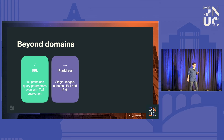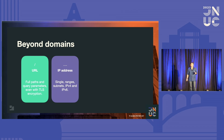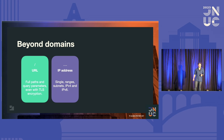IP addresses — that's another key vector for threat actors. IP addresses are very easy to hide in the noise, and we're able to block that with the on-device content filter. Another aspect about IP addresses is that a user can easily circumvent a domain-based rule by finding out what the IP address is for that, and we're able to block single IP addresses, ranges, and subnets with the on-device content filter.